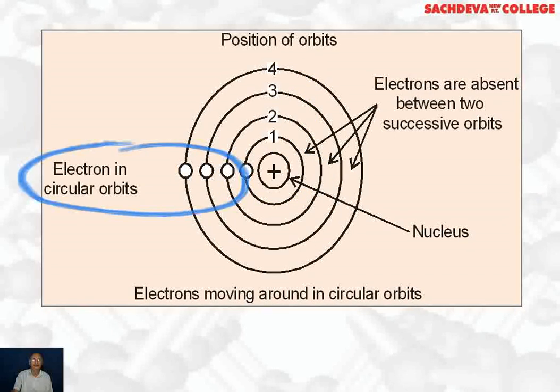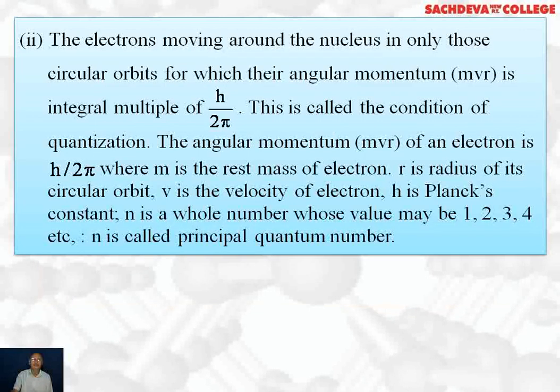Electrons are moving in these circular orbits. The electrons moving around the nucleus in only circular orbits for which their angular momentum MVR is integral multiple of h/2π. Integral multiple means 1h/2π, 2h/2π, 3h/2π and so on. This is called the condition of quantization.